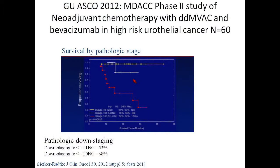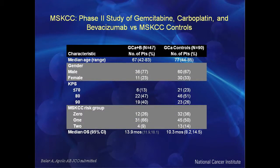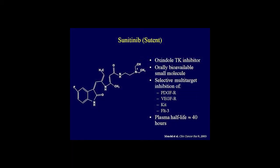Avastin has also been studied in the invasive setting in patients undergoing cystectomy, presented this year at GU-ASCO, and was found to be safe. At Memorial Sloan Kettering, we studied Avastin in patients with renal insufficiency, using carboplatin instead of cisplatin in combination with Avastin. Sunitinib is another anti-angiogenic agent — a pill that changed the standard of care for kidney cancer. There is rationale for its use in bladder cancer because VEGF and pro-angiogenic proteins are overexpressed in bladder tumors.